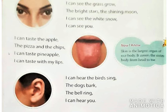Next is tongue. I can taste the apple, the pizza and the chips, I can taste the pineapple. Tongue से हम क्या कर सकते हैं — taste कर सकते हैं। Apple, pizza, chips, pineapple — सारे हम taste कर सकते हैं। कौन से organ से? Tongue से।